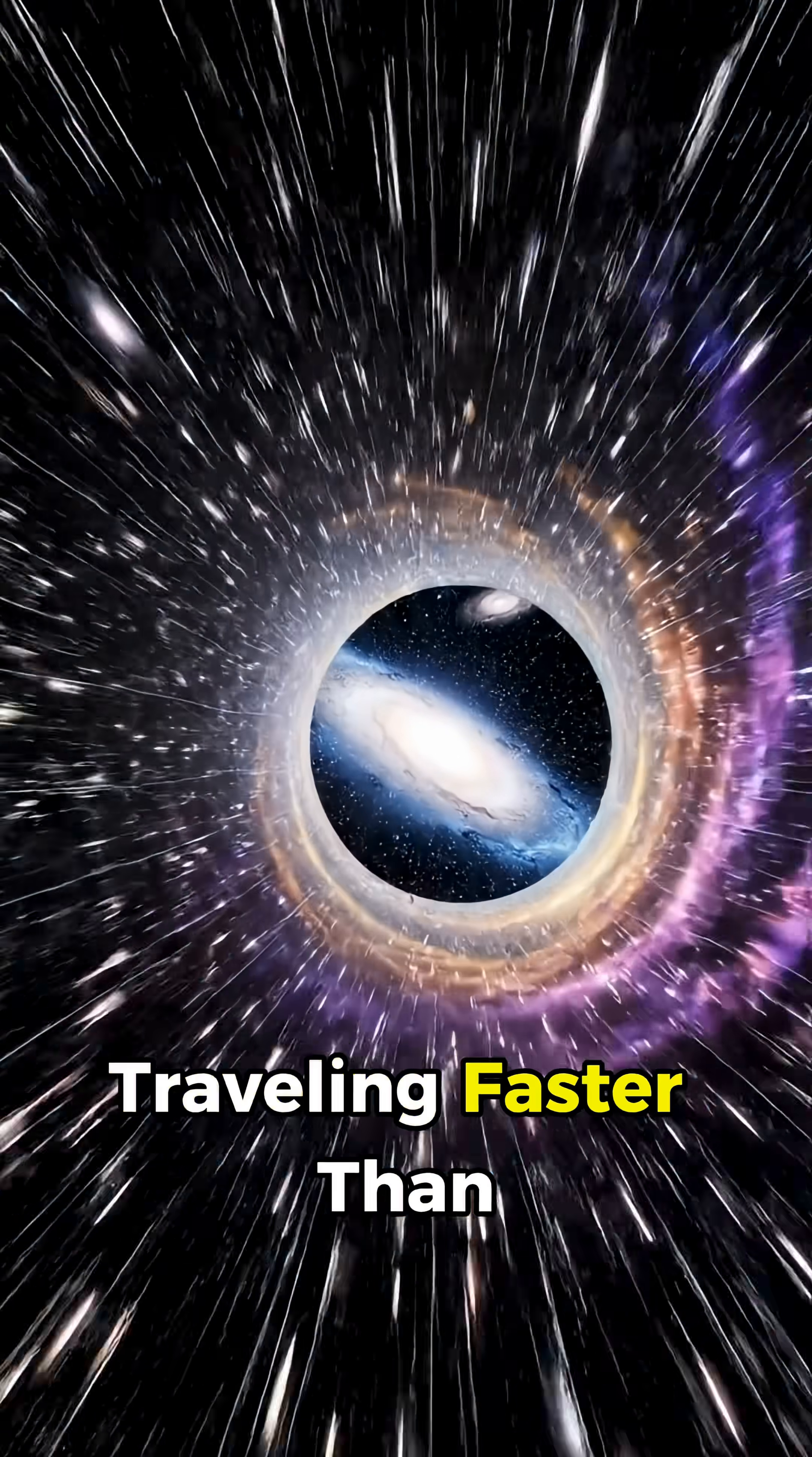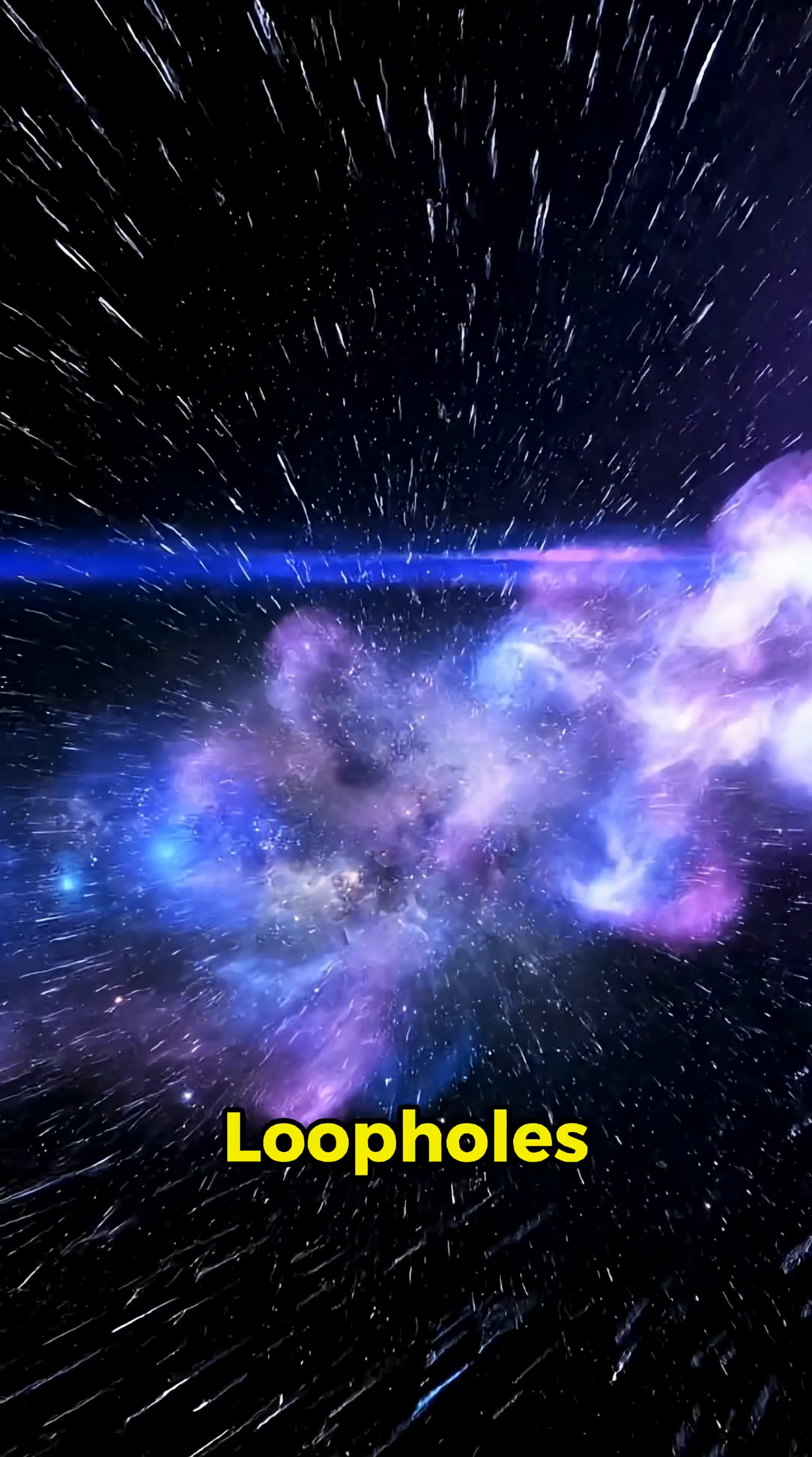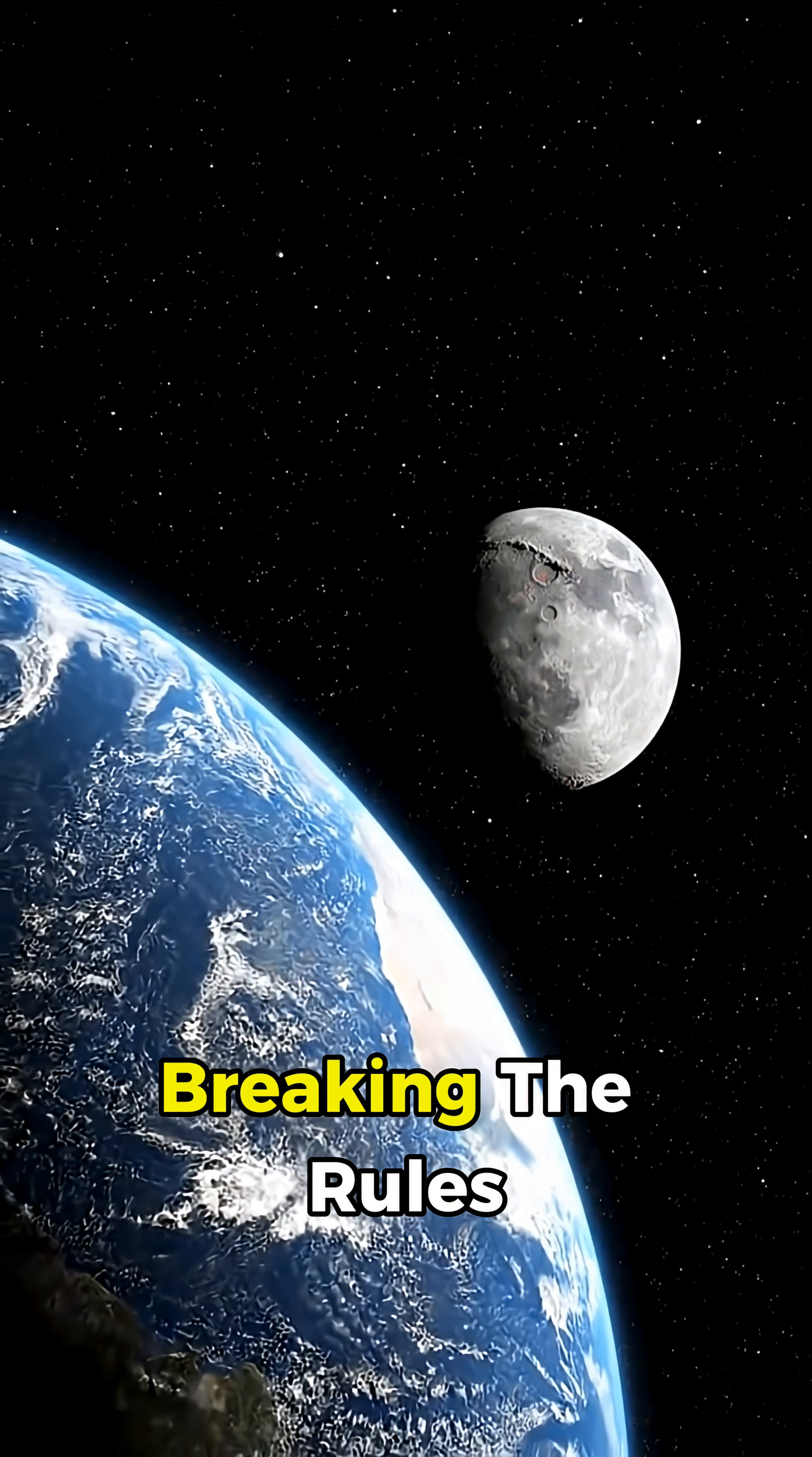So when you hear this object is traveling faster than light, your brain screams impossible, but physics calmly whispers, watch closer. Because the universe loves loopholes, illusions, and perspective tricks. And if you rewind to that laser dot sweeping across the moon, you're right back where we started, watching something outrun light without ever truly breaking the rules.